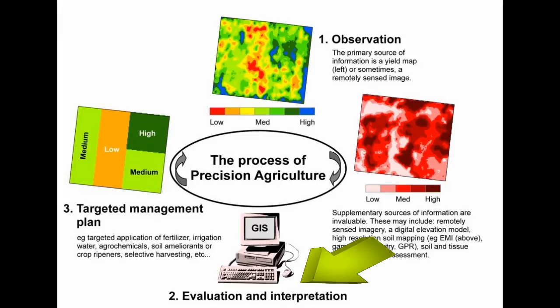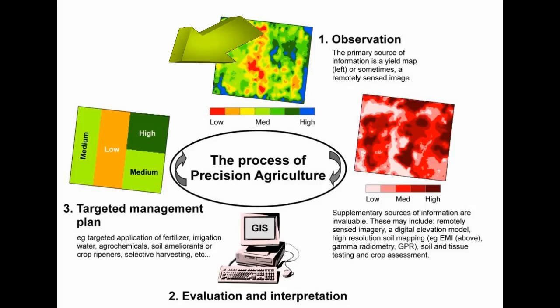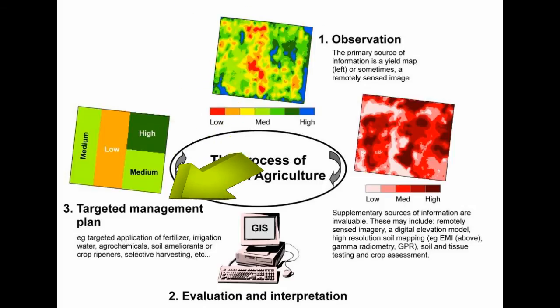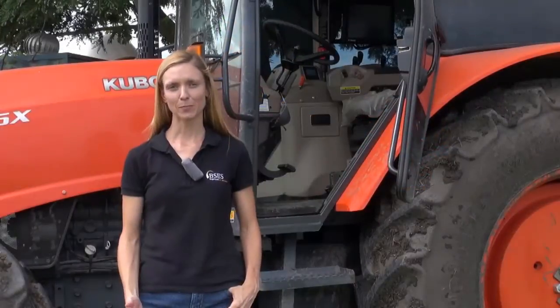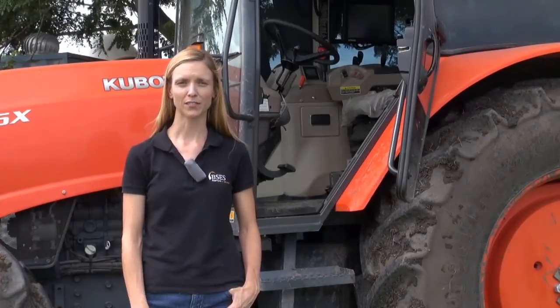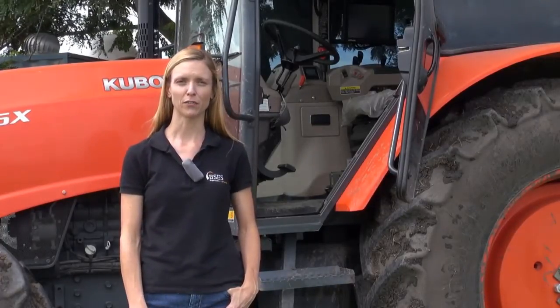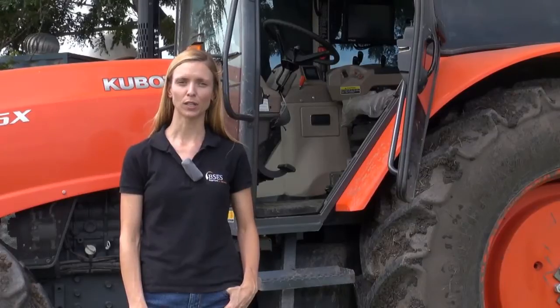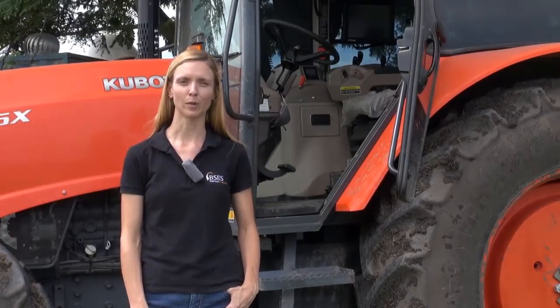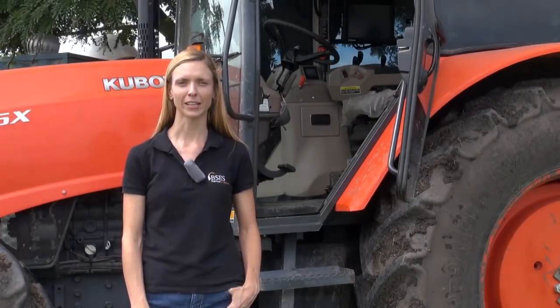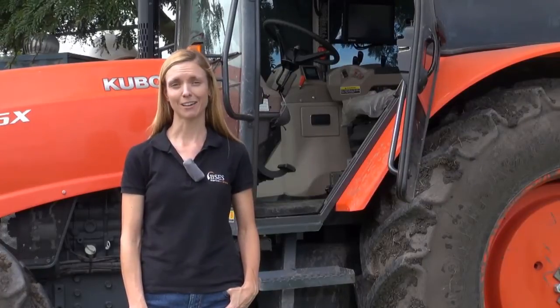Evaluating all of this information together can give you a better understanding of the causes of variability on your farm. Then you can consider establishing management zones, and you can start to manage each zone differently, creating a more efficient system. For example, if you discover that you have sodic soils that are affecting productivity in one area of your farm, you could apply gypsum only in the areas where it's needed rather than a blanket application across the whole paddock. This saves time, money, and resources.